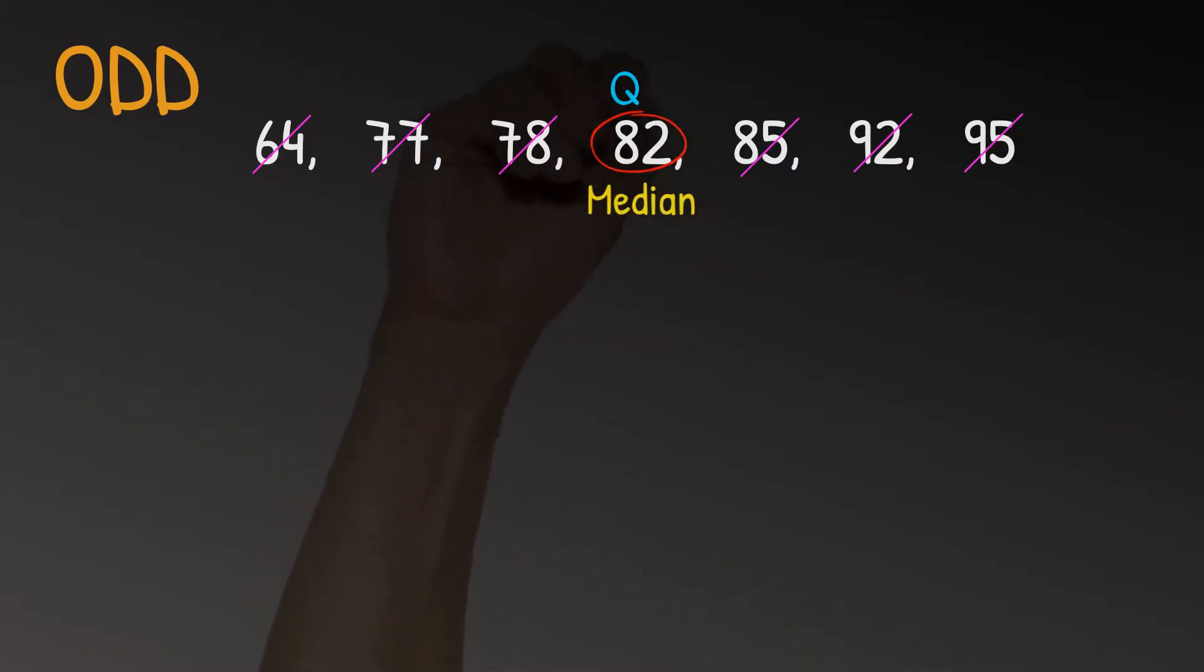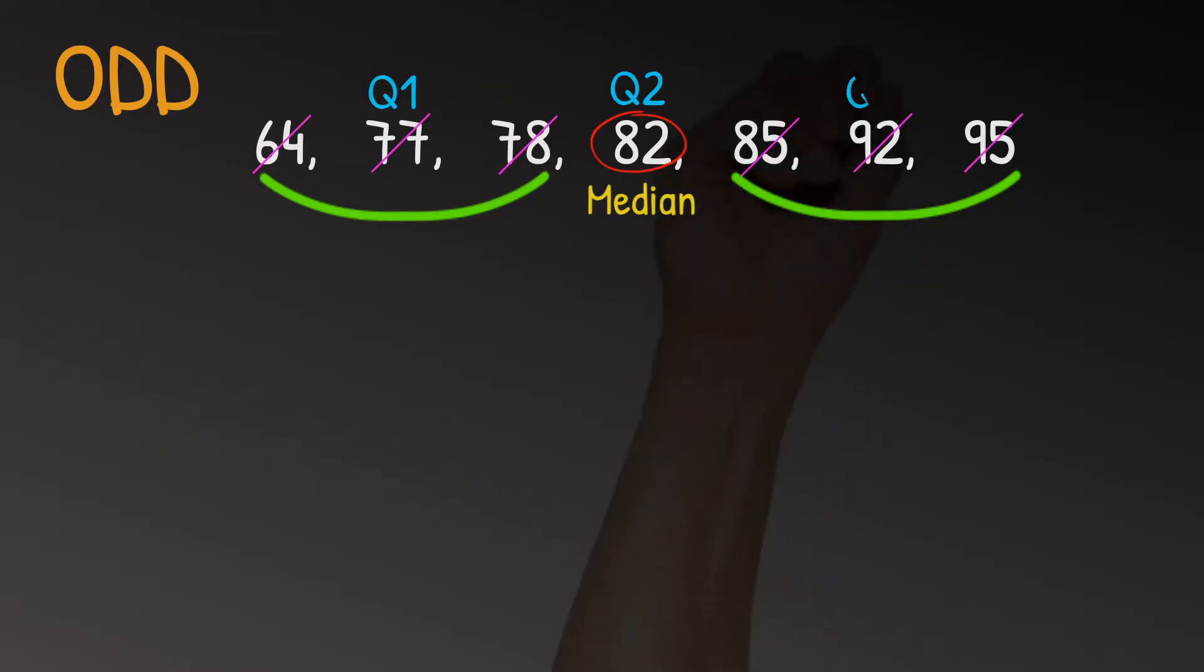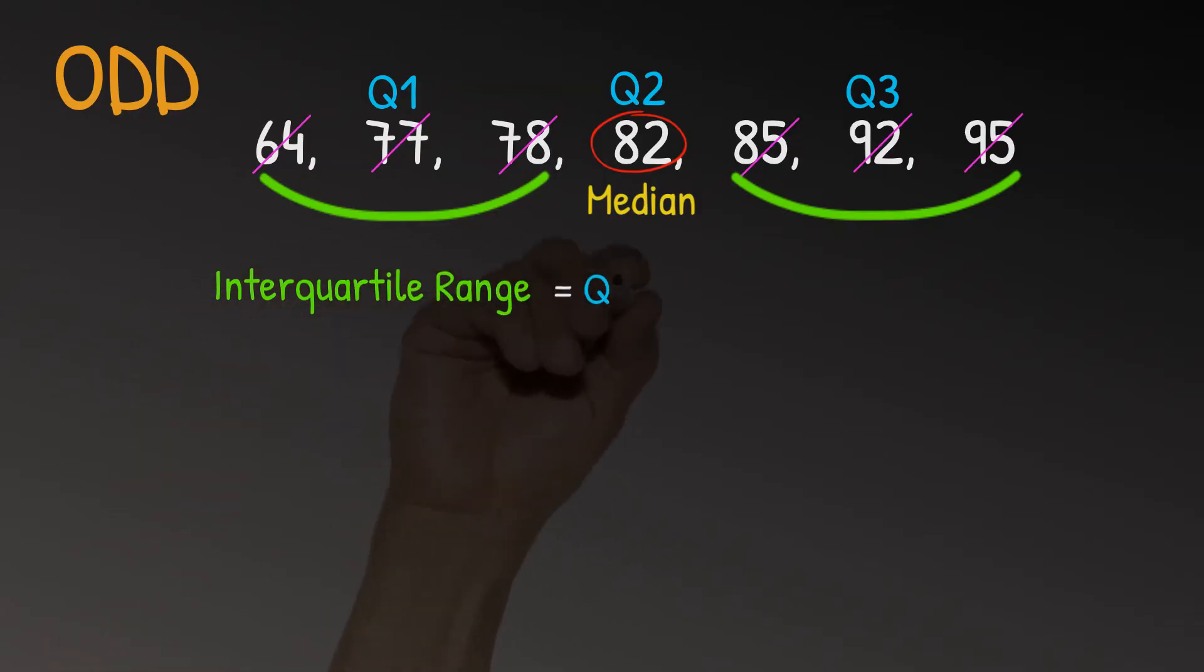Now we found the middle, we have to find Q1 from these three values. And as there are only three values, it's fairly simple. We can see that the value in the middle is 77. So Q1 is equal to 77. And similarly, there are only three values in the second half of the data set. So we can clearly see that in the middle is 92. So Q3 is equal to 92. So now we can work out our interquartile range, which is Q3 take away Q1. We have 92 minus 77, which is equal to 15.